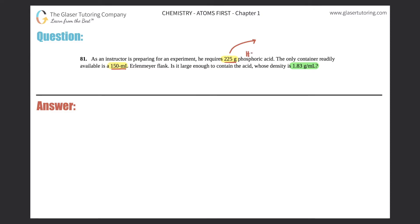which is H3PO4, just so you guys get into the hang of what your acids look like, you just need to know what is this volume, right? We need to figure out how much volume this 225 grams of phosphoric acid will be, so we can know whether a 150 milliliter Erlenmeyer flask is sufficient.